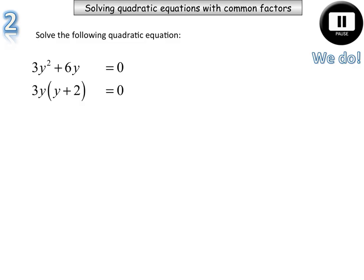Alright, so after taking out a 3y, that's the highest common factor, we'll end up getting a y plus 2 in brackets. Check it by expanding: 3y times y is 3y squared, 3y times positive 2 is positive 6y.